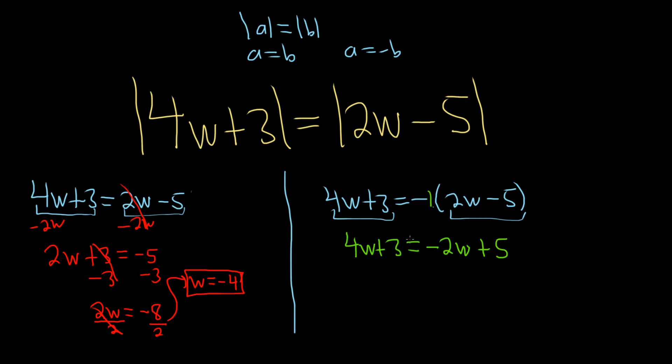And again, our goal is to get all of the w's on one side by themselves. So we'll start by adding 2w to both sides. So plus 2w plus 2w. These cancel. So we have 6w plus 3 equals 5.